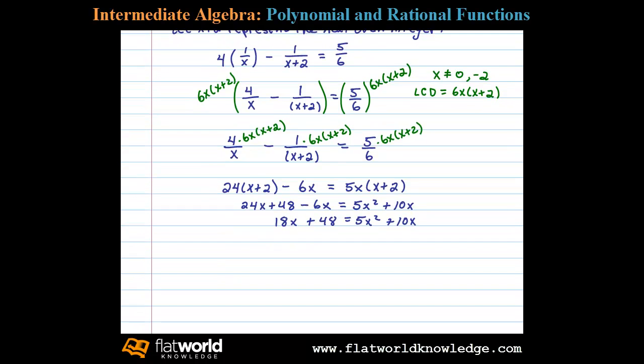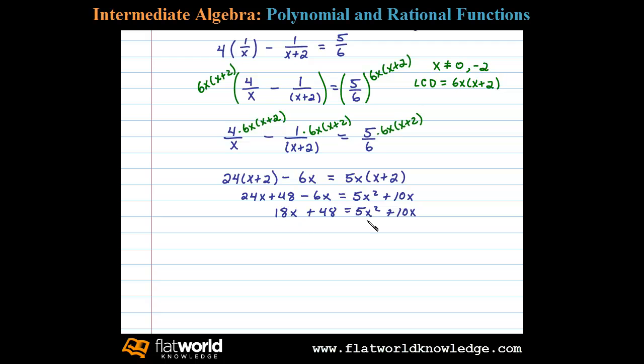Now subtracting 18x on both sides and subtracting 48 on both sides leaves us with 0 equals 5x² minus 8x minus 48. Now this quadratic factors.